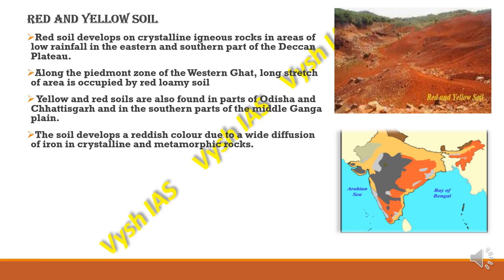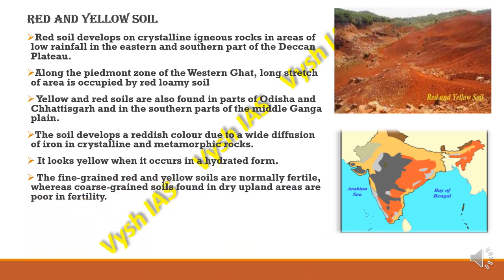This soil develops a reddish colour mainly due to the presence of iron in crystalline and metamorphic rocks. It looks yellow when hydrated with a lot of moisture. Fine-grained red and yellow soils are normally fertile, but coarse-grained soils found in dry upland areas will be poor in fertility because of low rainfall. They are generally lacking in nitrogen, phosphorus, and humus.